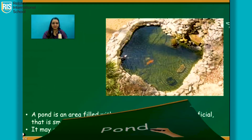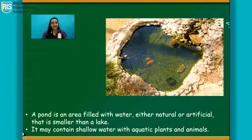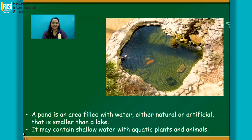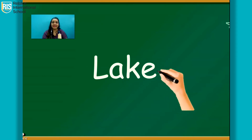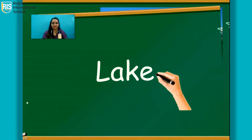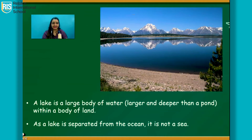Pond. A pond is an area filled with water, either natural or artificial, that is smaller than a lake. It may contain shallow water with aquatic plants and animals. Lake. A lake is a large body of water, larger and deeper than a pond, within a body of land.